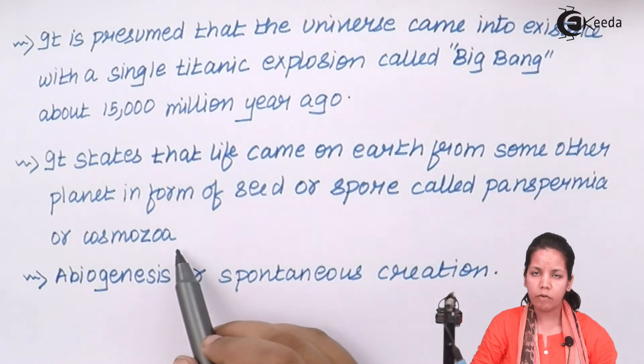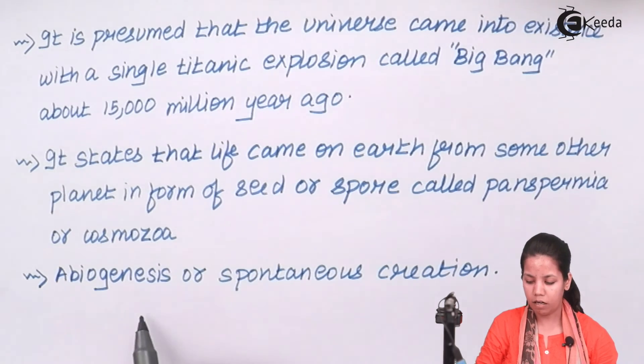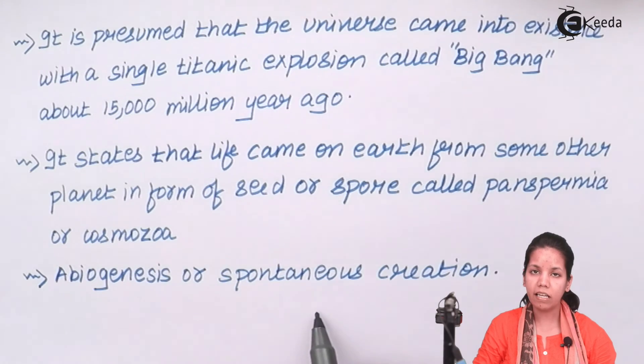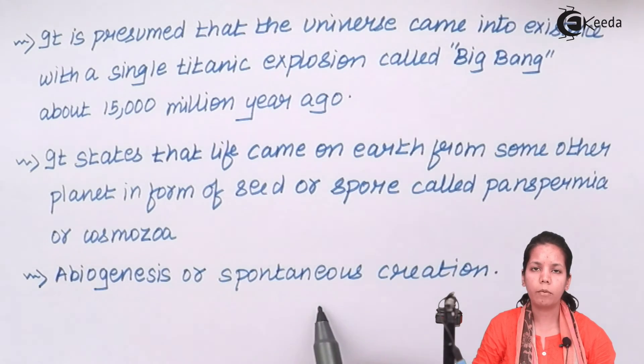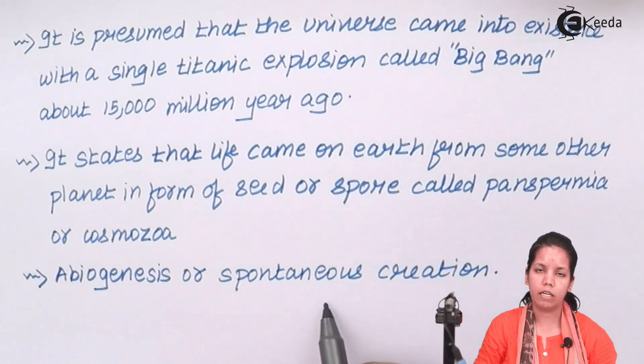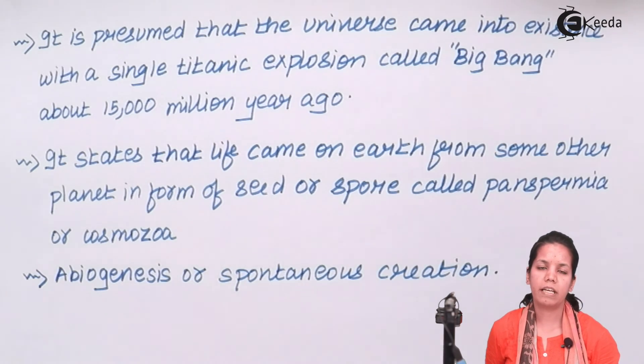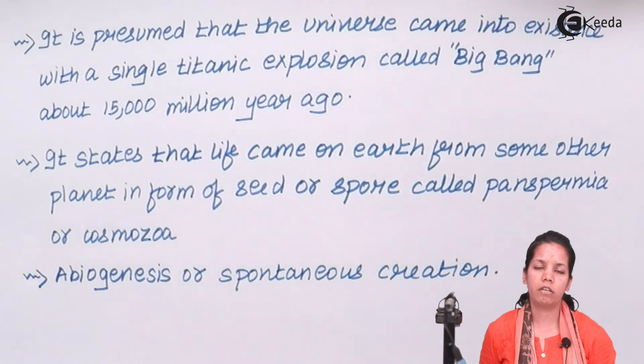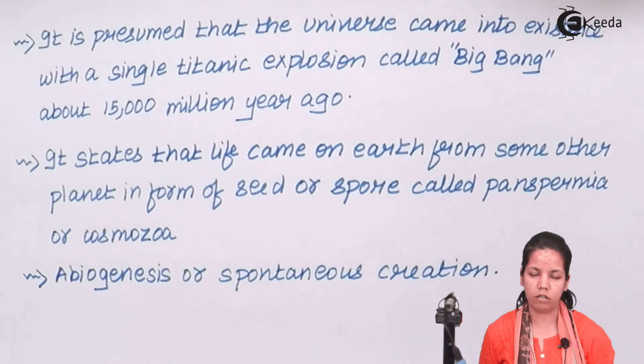There were other groups of scientists which stated that abiogenesis or spontaneous creation, along with evolution from time to time, was the reason earth was created, and also the living organisms on earth were created. So different groups of scientists gave different theories for evolution or origin of life on earth.